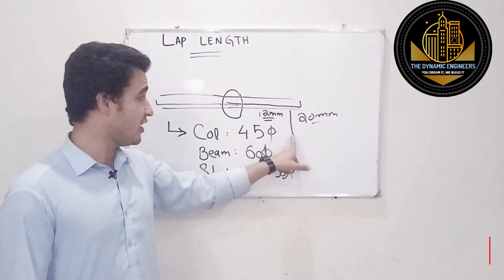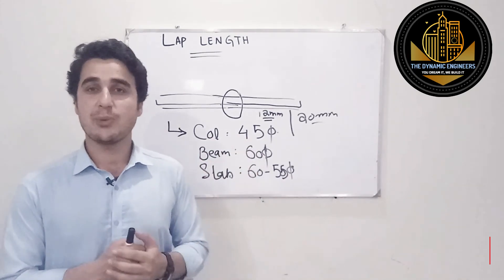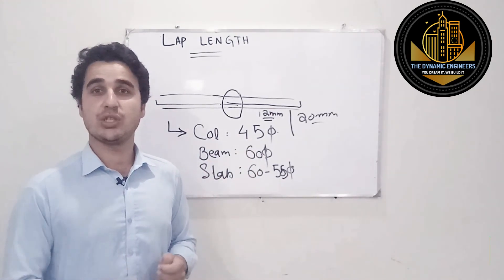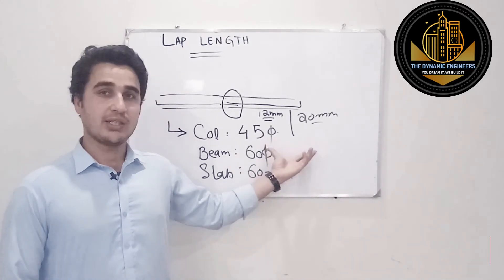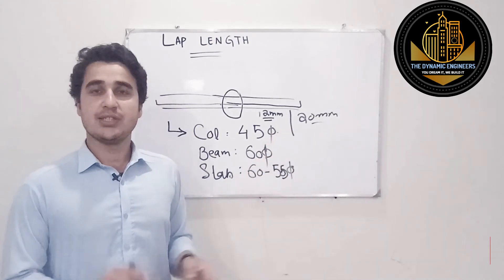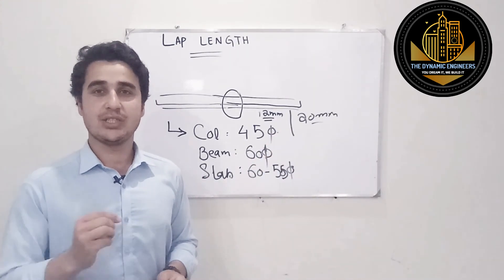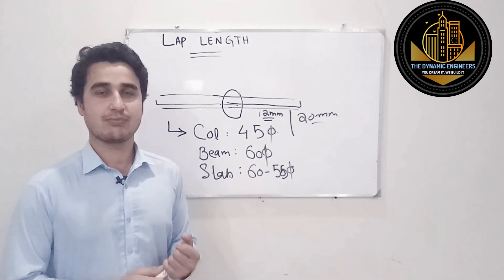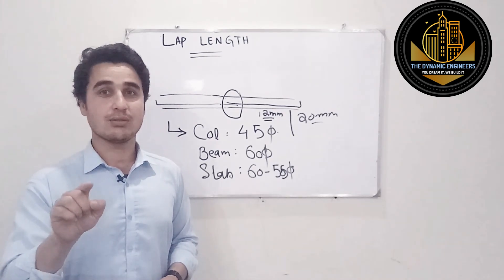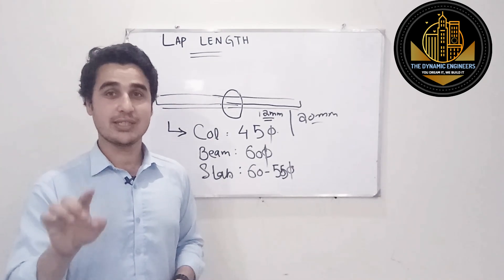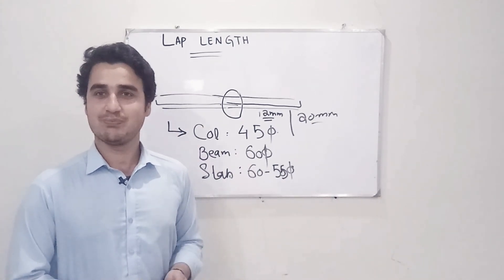So I hope you would have learned something from this. These are the values that you need to memorize because whenever you go for inspection or whenever you will have to design a beam, a column, or a slab, you will have to provide these by thumb rule. Otherwise, the lap length is something that is recommended by the designer during design process. So I hope you would have learned something from this video. If you have learned, don't forget to subscribe our channel so that you may get other videos as well. Thank you very much.